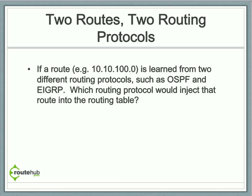The question is: which routing protocol would inject that route into the global routing table? The global routing table is what the router looks at to make its forwarding decisions on getting to point B.